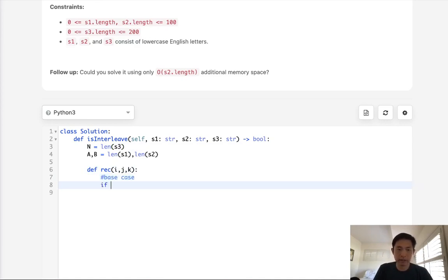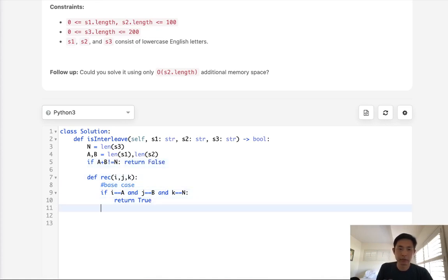Okay so first we need a base case, right? And what is the base case? Well if i is equal to a and j is equal to b and k is equal to n, basically we've reached the end of all three of these strings, that means we're at the end, we've been able to get here so we have to return true. There is one edge case though, we could have a case where the lengths don't equal one another and we don't want that to return true, right? So we'll say if a plus b does not equal n, return false immediately and we don't even have to enter this here.